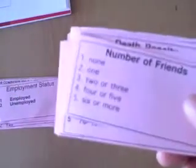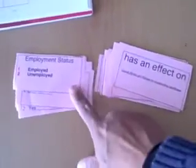Now let's pick out a dependent variable. Whether you're unemployed or not might have an effect on — let's say — the number of friends you have. So the dependent variable could be the number of friends you have. Your employment status has an effect on the number of friends you have. That's how you lay it out as your hypothesis sentence.